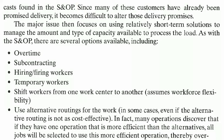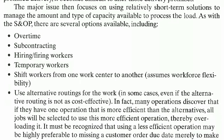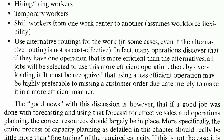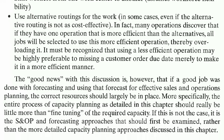As with S&OP, there are several options available including overtime, subcontracting, hiring or firing workers, temporary workers, shifting workers from one work center to another, using workforce flexibility, and using alternative routing for the work. In some cases, even if the alternative routing is not as cost effective, many operations discover that if one operation is more efficient than alternatives, all jobs get routed there, thereby overloading it. It must be recognized that using a less efficient operation may be highly preferable to missing a customer order due date merely to process it in a more efficient manner.